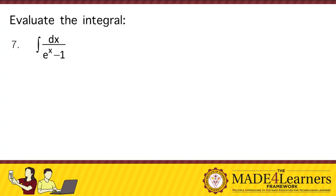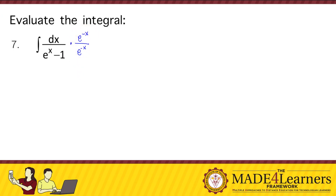What we can do here is to multiply e to the power of negative x in both the numerator and the denominator. Take note that when we multiply e to the power of negative x over e to the power of negative x, this is just equal to 1. So we are not changing the given — we are doing this because we want to change our given into an integrable form.